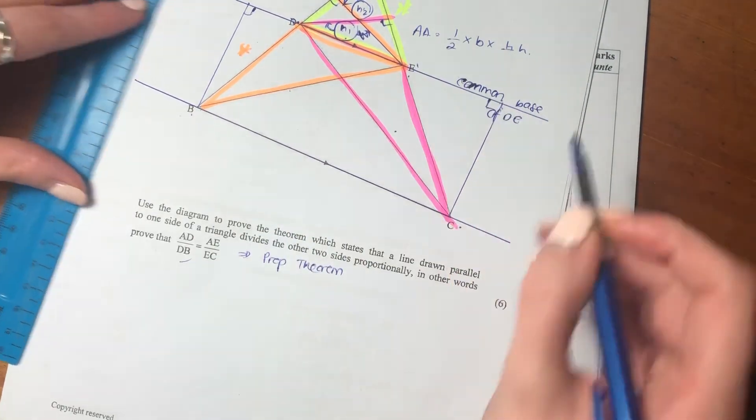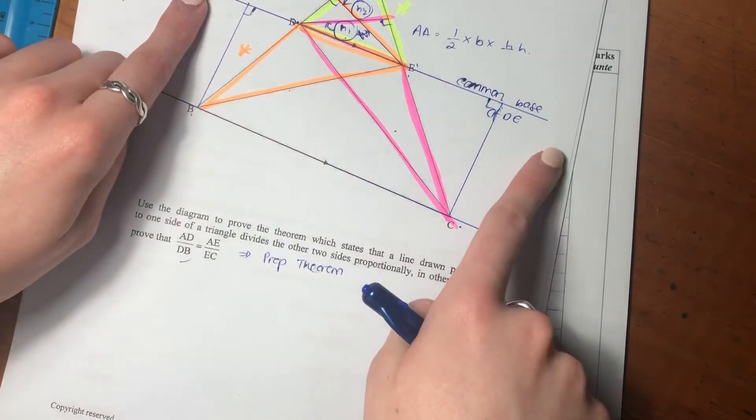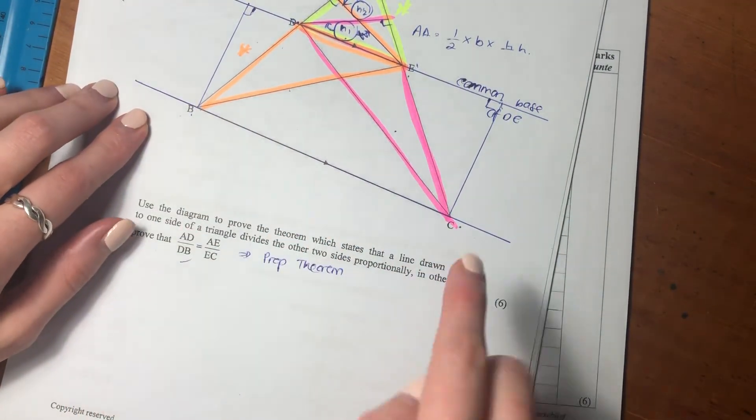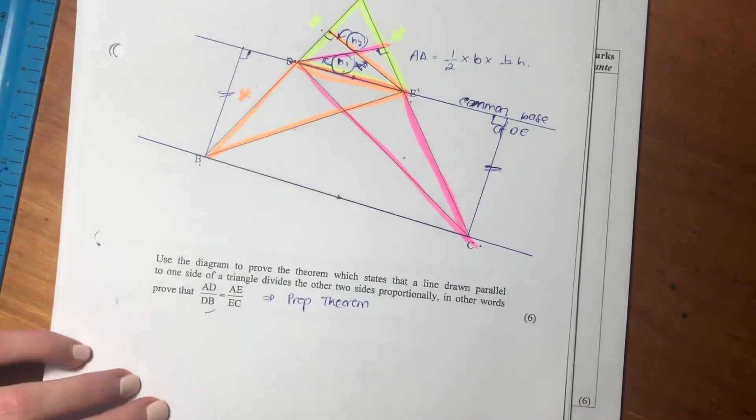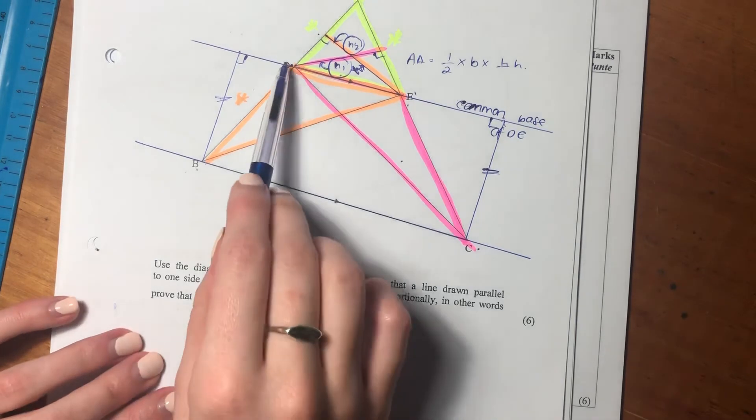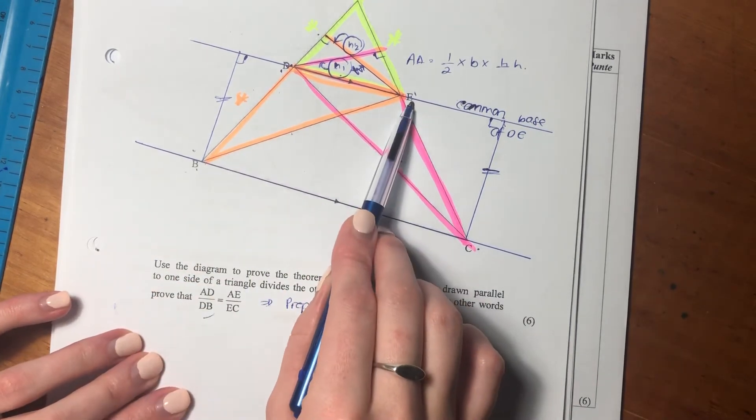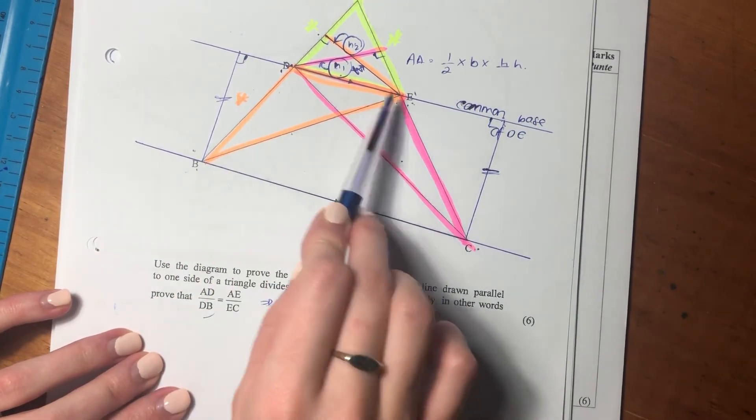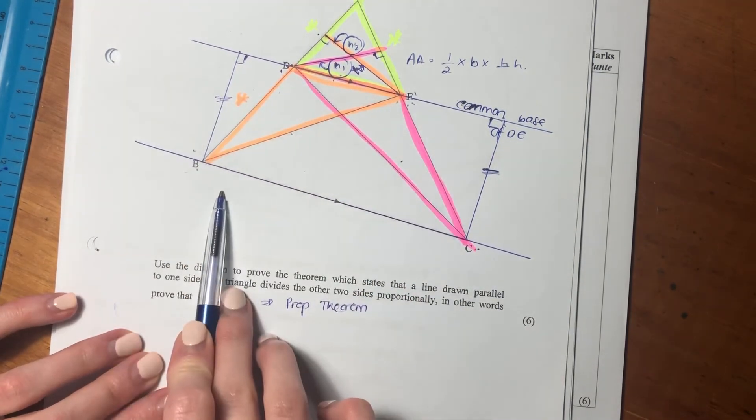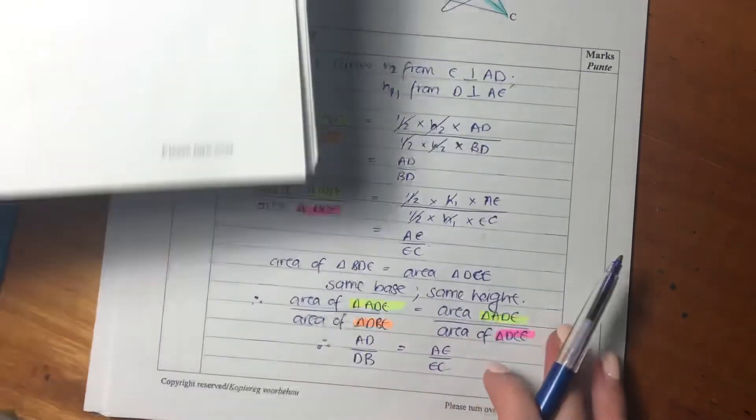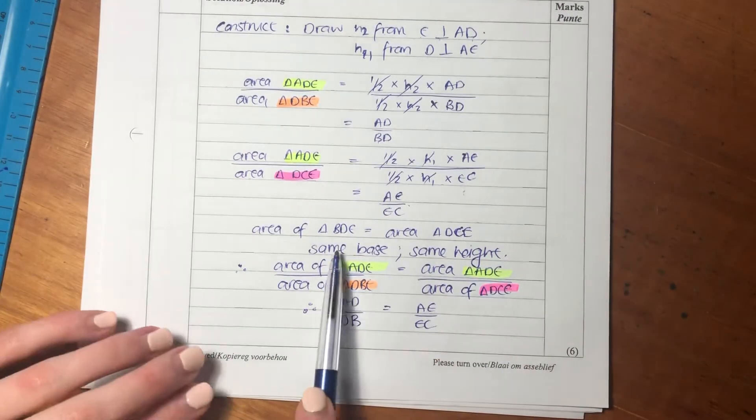But because DE is parallel to BC, we know that this height is going to equal that height. So actually, we know that the area of DBE equals the area of DCE because of these parallel lines. Same base, same height. So because they have the same base and the same height, we say they equal each other.